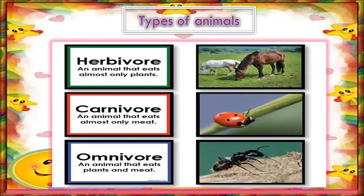Omnivores: human beings and some animals or birds eat both plants and animals. They are called omnivores. Examples include bears, hens, and crows.